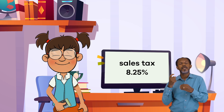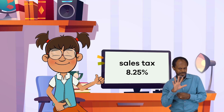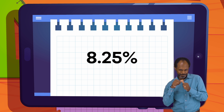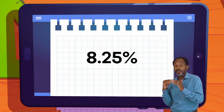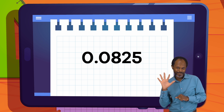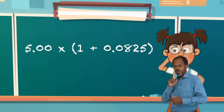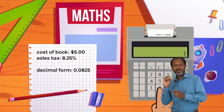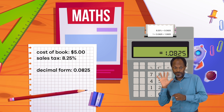After some research, Frankie finds out that the sales tax for the book is 8.25%. First, she has to change the sales tax percentage to a decimal: 8.25% equals .0825. Next, she needs to multiply the sales price of the book by 1 plus the decimal she just figured out. 1 plus .0825 equals 1.0825.